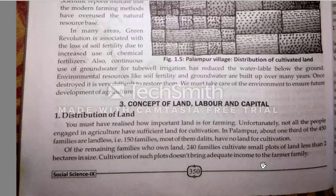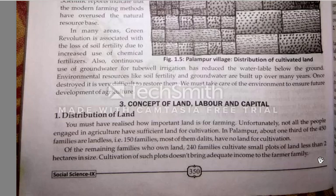Cultivating land which is less than two hectares does not bring adequate income. Adequate means sufficient — it does not bring sufficient income to the farmer's family.